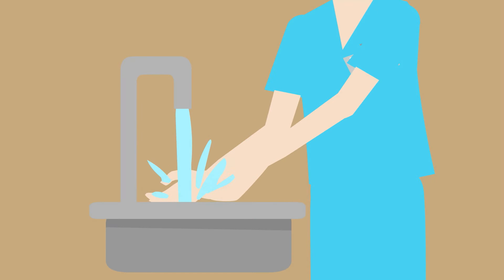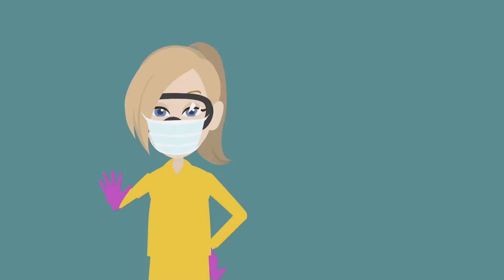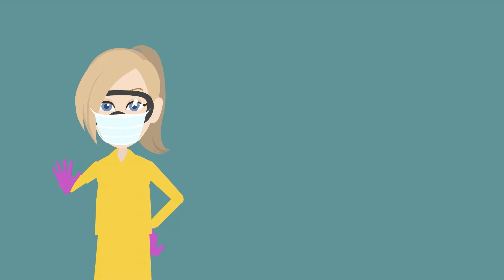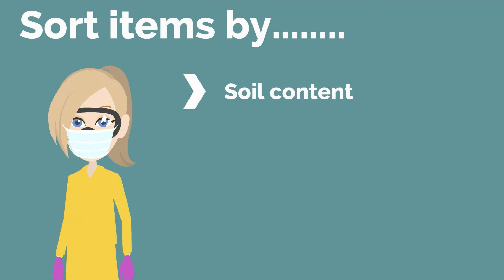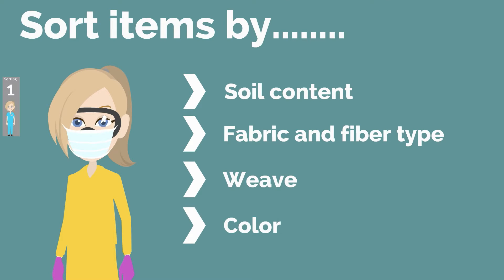First, staff should perform hand hygiene and apply PPE — gloves, gown, and face protection if splashing is anticipated. Staff should sort items by soil content, heavily soiled from lightly soiled. Staff should also sort by fabric and fiber type, by the weave of the material, and by color.